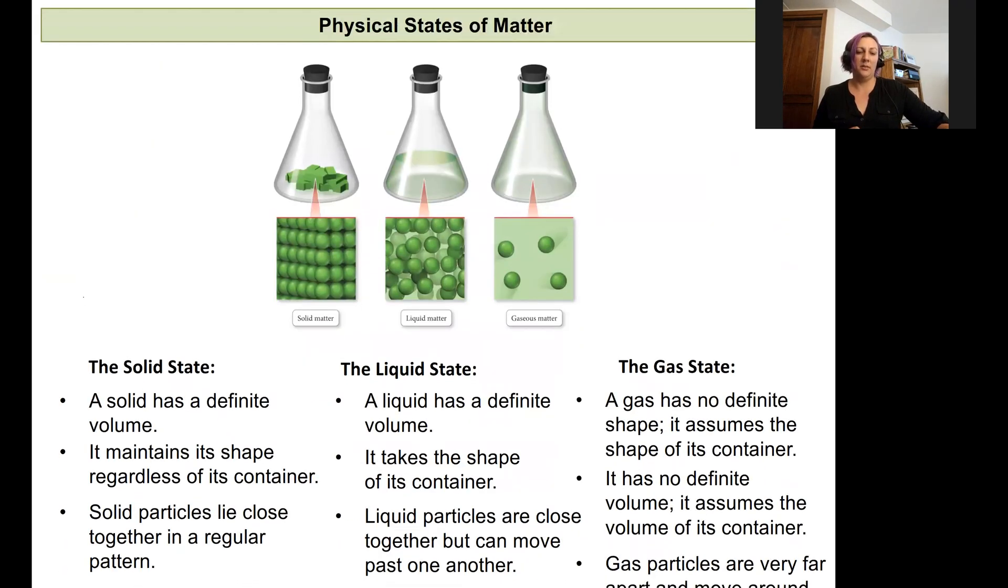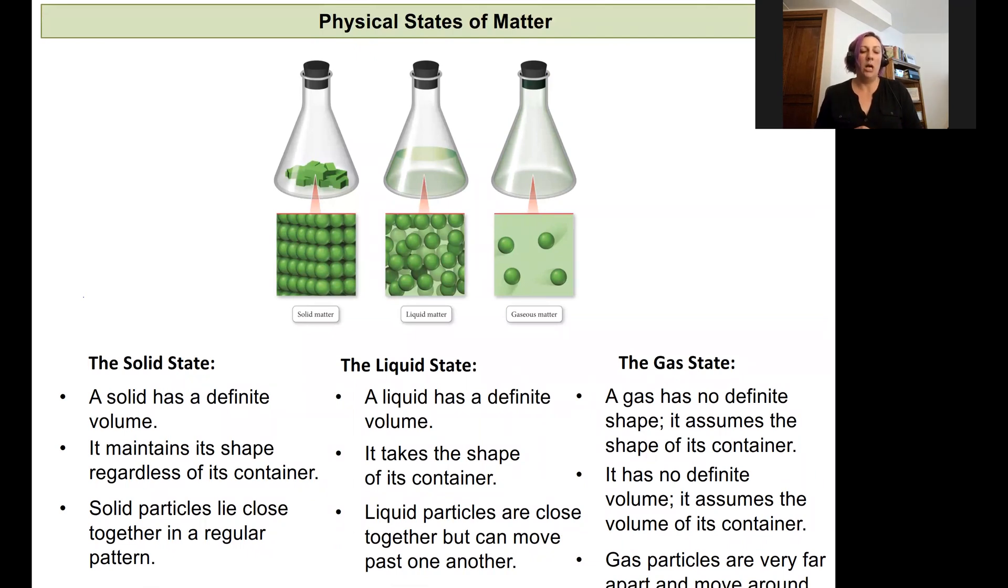Matter also comes in a number of physical states. We may see matter exist as a solid, in which case it would have a very specific definite volume and a shape that would be unique to it. It would maintain that shape no matter where you put it. In our solid matter, the atoms or the molecules will be very close together and they'll stay in the same relative positions to one another, which means that those atoms or molecules will not be moving very much.